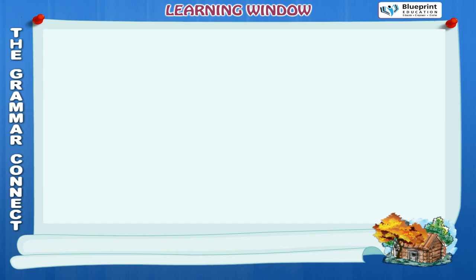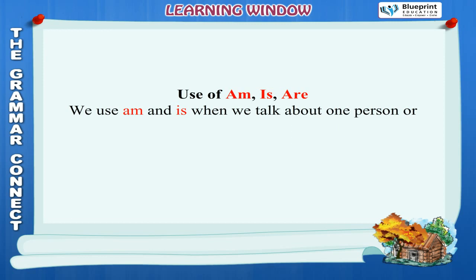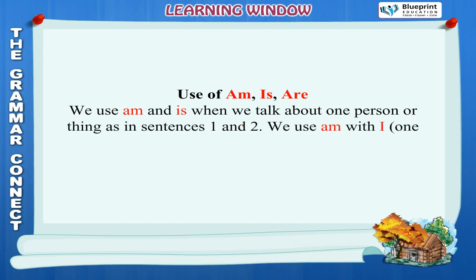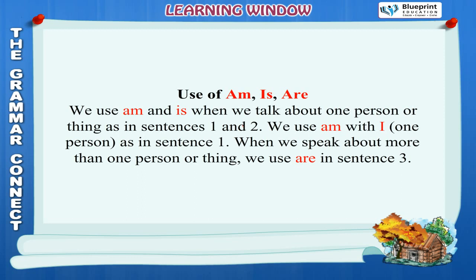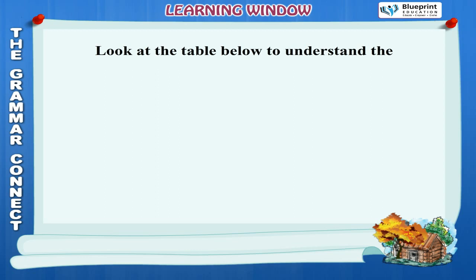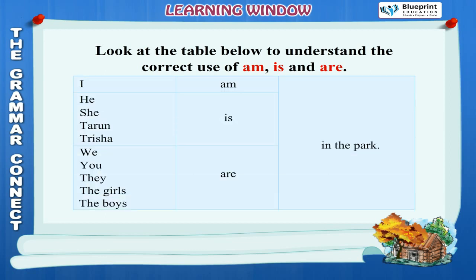Use of am, is, are: We use am and is when we talk about one person or thing. We use am with I. When we speak about more than one person or thing, we use are. Look at the table: I am in the park. He is in the park. She is in the park. Tarun is in the park. Trisha is in the park.